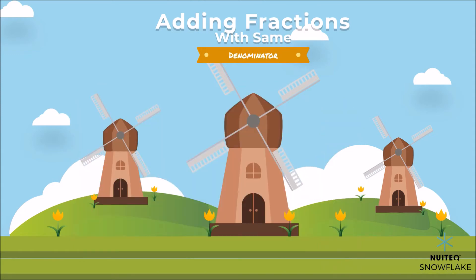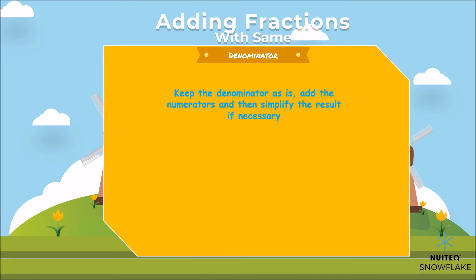First let's consider the steps involved when the fractions we are adding have the same denominator. When this is the case, we simply keep the denominator as is, add the numerators as indicated, and then simplify the result if necessary.